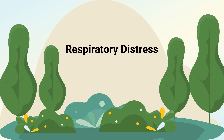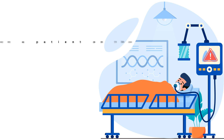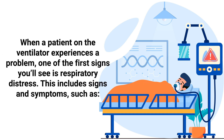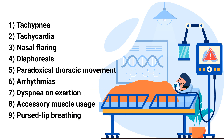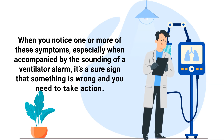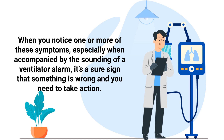The first problem to mention is respiratory distress. When a patient on the ventilator experiences a problem, one of the first signs you'll see is respiratory distress. This includes signs and symptoms such as tachypnea, tachycardia, nasal flaring, diaphoresis, paradoxical thoracic movement, arrhythmias, dyspnea on exertion, accessory muscle usage, and pursed-lip breathing. When you notice one or more of these symptoms, especially when accompanied by a ventilator alarm, it's a sure sign that something is wrong and you need to take action.